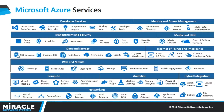The security center unifies security management and enables advanced threat protection across hybrid cloud workloads. Real-time data stream processing from millions of IoT devices is done by Stream Analytics. HDInsight services are used to provide cloud Hadoop, R servers, and Spark clusters. From IoT, we have Event Hubs, which is used to receive telemetry from millions of devices, and IoT Hubs used to connect, monitor, and control billions of IoT assets. And so on — many more service offerings are provided by Microsoft.